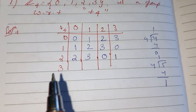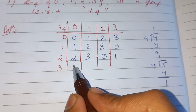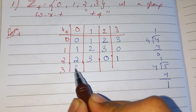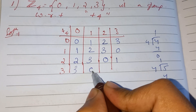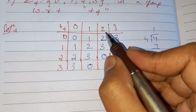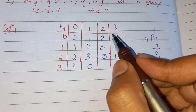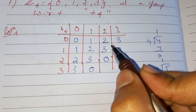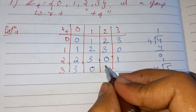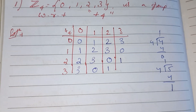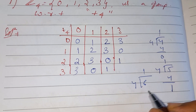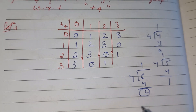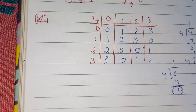Similarly, 3 plus 0 is 3. For 3 plus 1 equals 4, the remainder is 0. Then 3 plus 2 equals 5, remainder 1. And 3 plus 3 equals 6; if we divide 6 by 4, the remainder is 2. Now we will check the properties one by one.